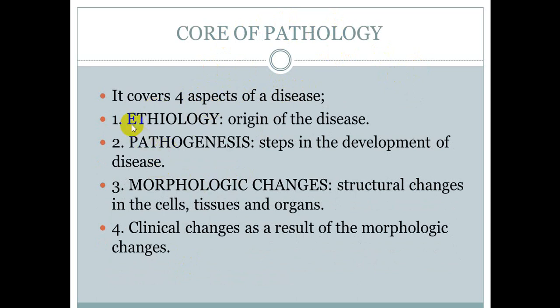Chaar aspects: first is etiology — that is the origin of the disease, cause of the disease, ke ek disease ki cause kya hai, kis wajah se yeh disease ho gayi hai. Second is pathogenesis — steps in the development of the disease. Ek cause ho gaya, cause ke baad disease ki development kaise hogi — that is pathogenesis.